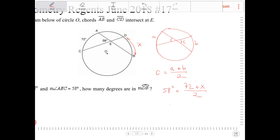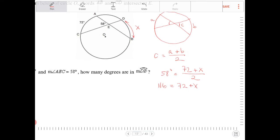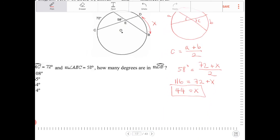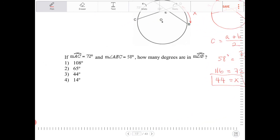Cross multiply both sides by 2, I get 116 equals 72 plus x. Subtract both sides by 72, and I end up with 44. So x equals 44, meaning arc BD equals 44 degrees, which is option 3.